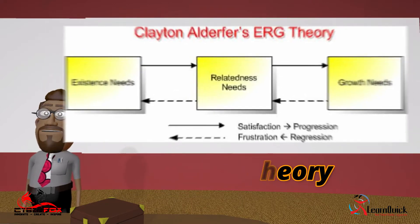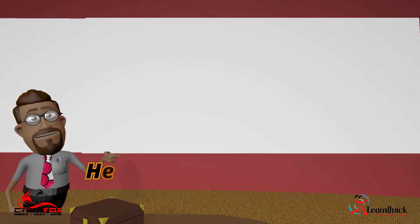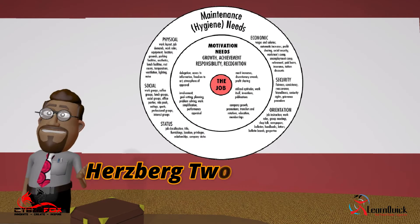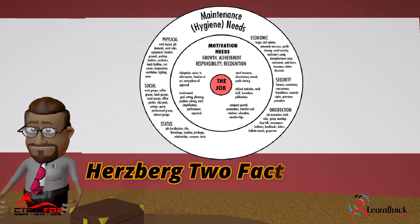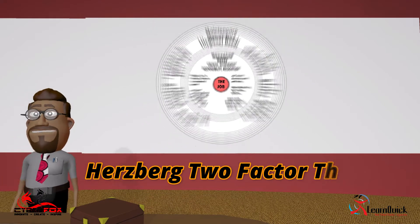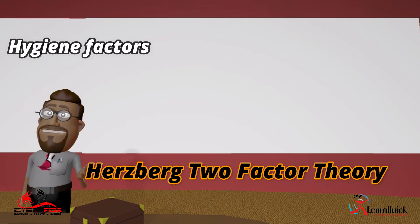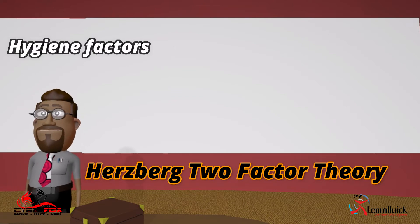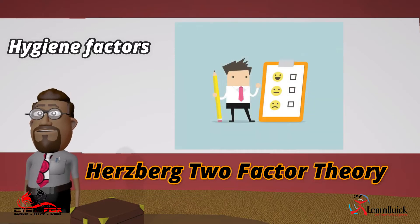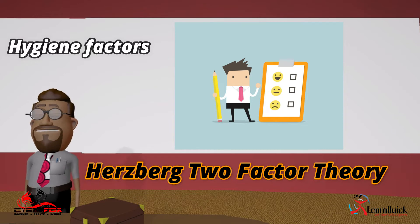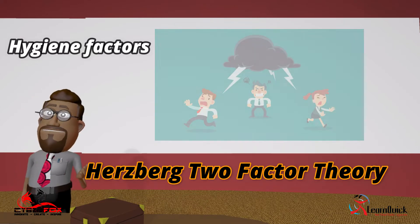According to Herzberg, there are two kinds of factors that affect motivation: hygiene factors and motivators. Hygiene factors are the things that people get dissatisfied if they are removed and act to get them back. Examples of such factors are working conditions, working benefits, company policies, and interpersonal relationships.